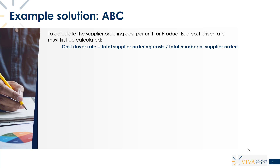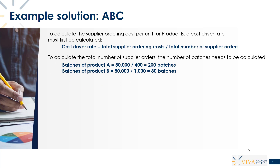We first need to work out how many batches of each product will be produced. Product A is produced in batches of 400 units, and we're making 80,000 units, so that's 200 batches. Product B is produced in batches of 1,000 units, so 80,000 units gives us 80 batches. In total, we've got 280 batches across the different product lines.